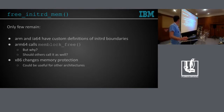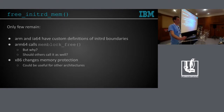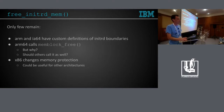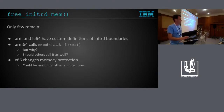ARM64 calls memblock_free for the whole init area, and it's the only architecture that does it. Although other architectures retain memblock for runtime, they don't call it. I'm not sure whether it's a bug in ARM64 or in power not calling it. If anybody can say why ARM64 calls memblock_free in free_initmem, I'd appreciate the feedback. I tried to track through the code to see if memblock reserved areas are really used anywhere at runtime and couldn't find anything.